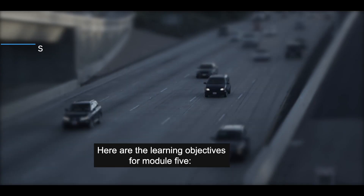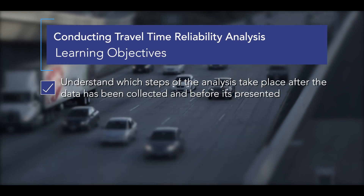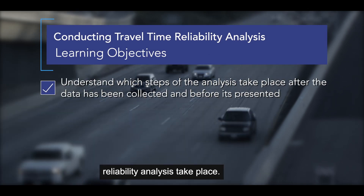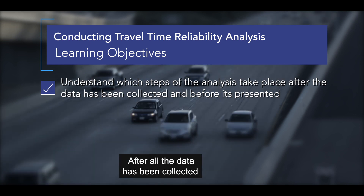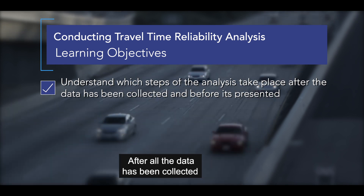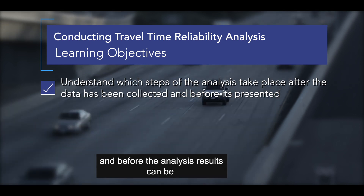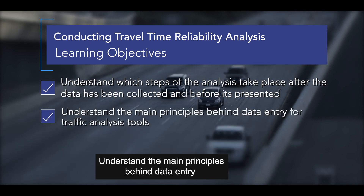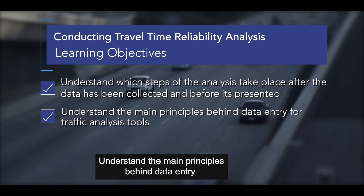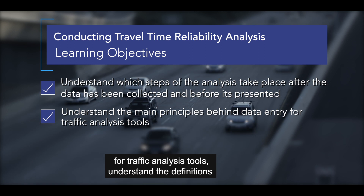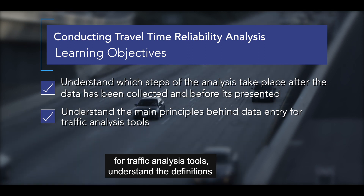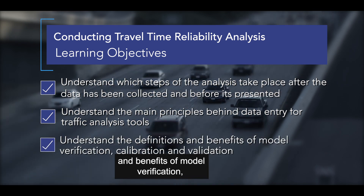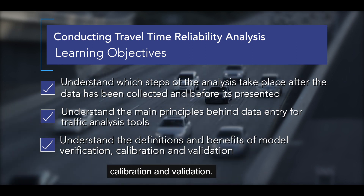Here are the learning objectives for module 5. Understand which steps of a travel time reliability analysis take place after all the data has been collected and before the analysis results can be prepared for presentation. Understand the main principles behind data entry for traffic analysis tools, and understand the definitions and benefits of model verification, calibration, and validation.